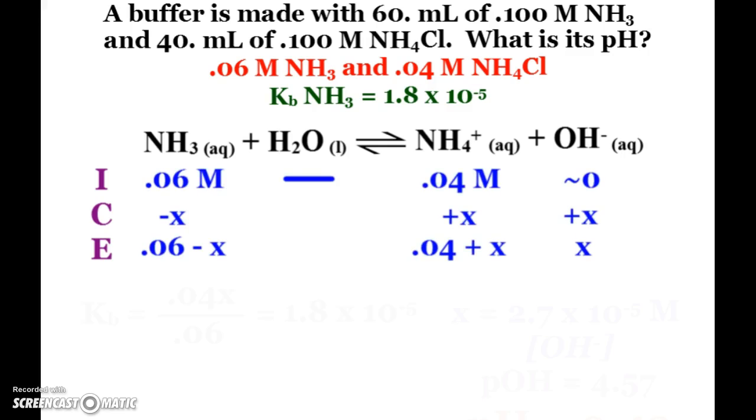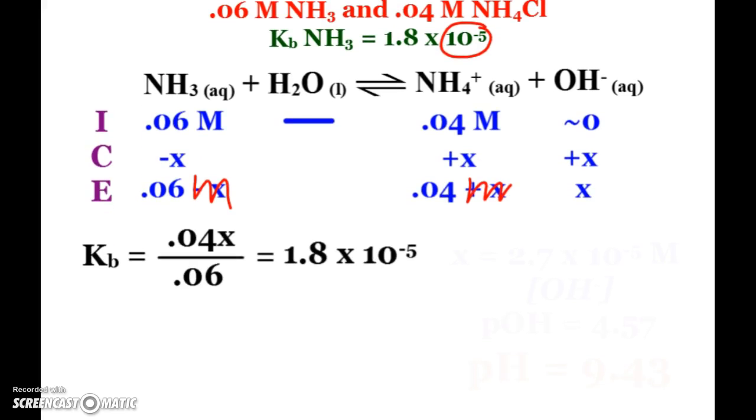Hopefully this is what your ice table looks like. I can do the check, but since my K value is 10 to the negative 5th, I'm pretty sure that my molarity divided by the K value will be greater than 100. So I can not worry about the quadratic. I can ignore my change in X's. And now I can do a plug and chug. Kb is 0.04x divided by 0.06, solving for X, 2.7 times 10 to the negative 5th.